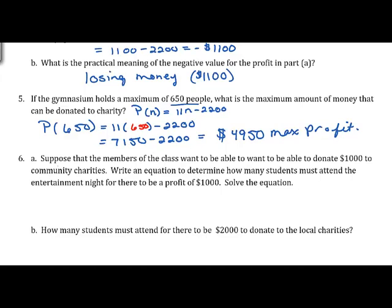In the next problem, suppose the members of the class want to donate $1,000 to community charities. Write an equation to determine how many students must attend for there to be a profit of $1,000, then solve the equation. So we want our profit to equal $1,000.